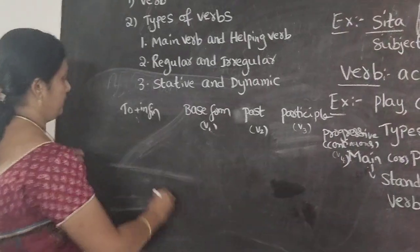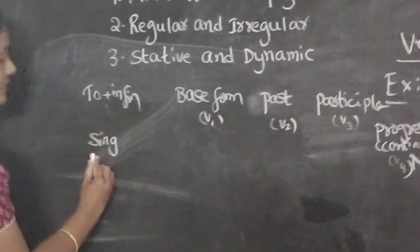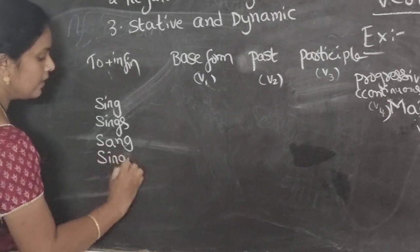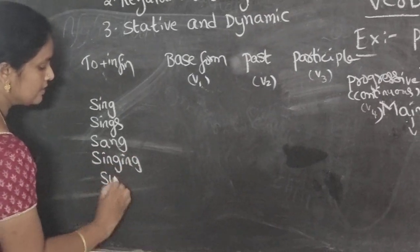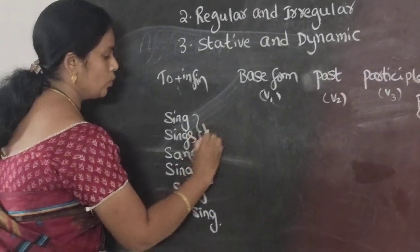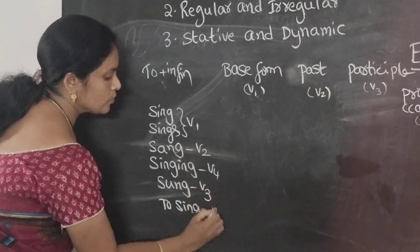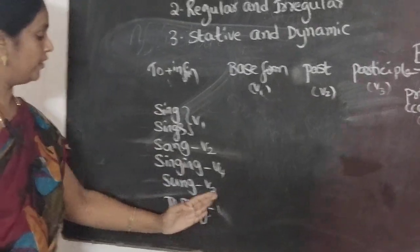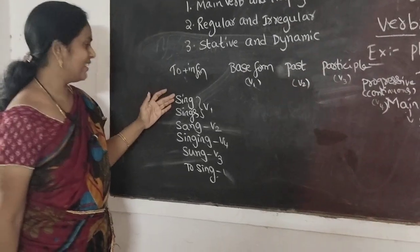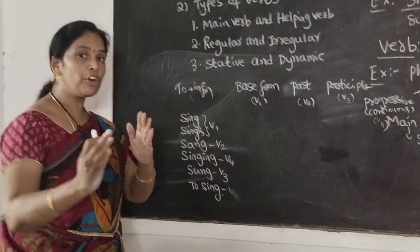Let us take one example. If you take 'sing': sing or sings (V1), sang (V2), singing (V4), sung (V3), and to sing — the to-infinitive. This is V1, V2, V4, V3, and to-infinitive. So what is sing and sings? Sing and sings are used according to the subject.